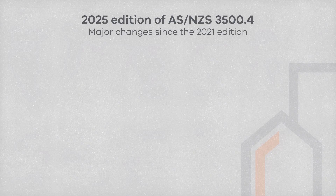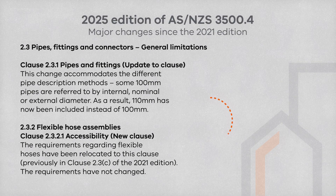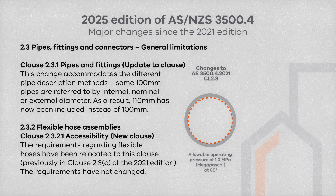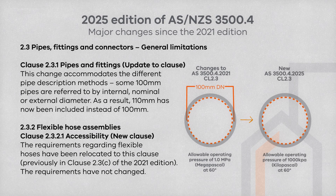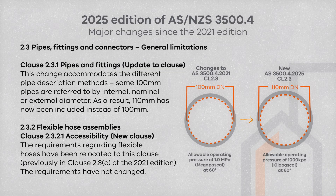Similarly to Part 1, Clause 2.3.1 in Part 4 addresses the provision where different descriptive methods of pipe size — such as internal, external or nominal diameter — are used for 100mm pipes. The size range has been increased from 100mm to 110mm.